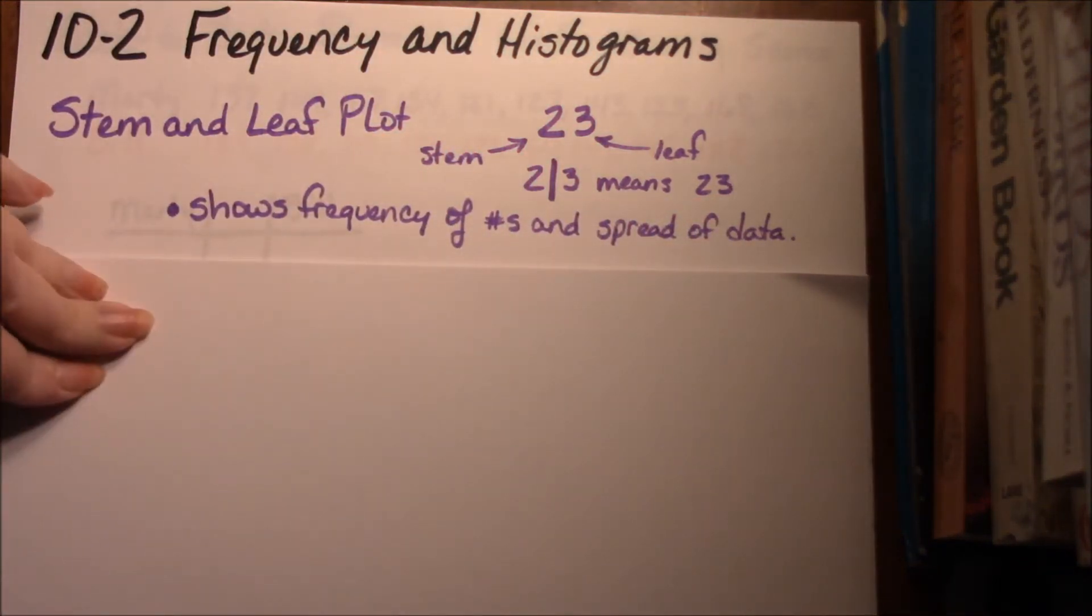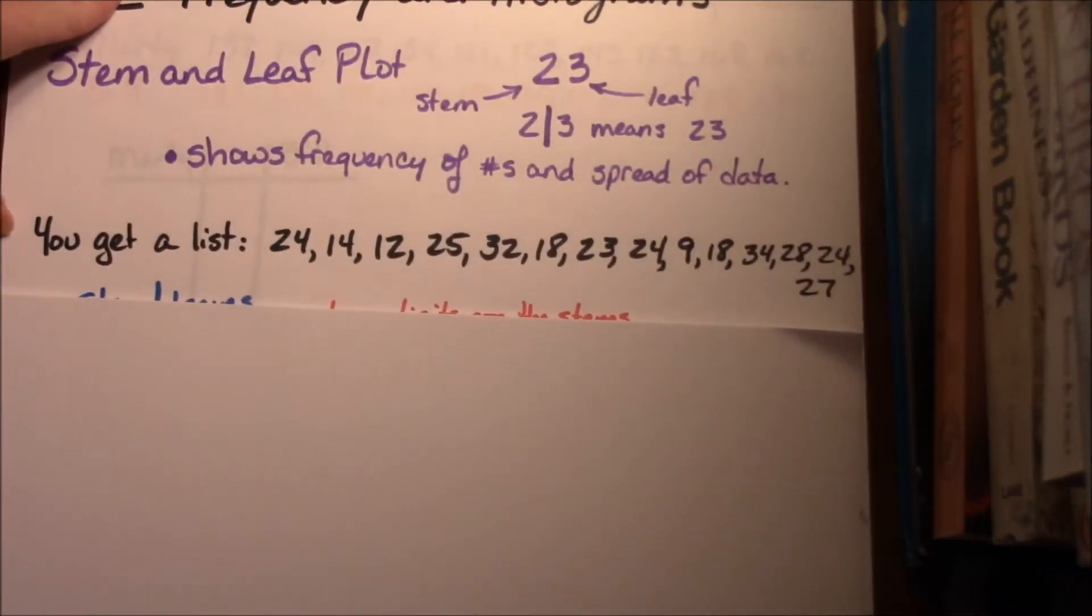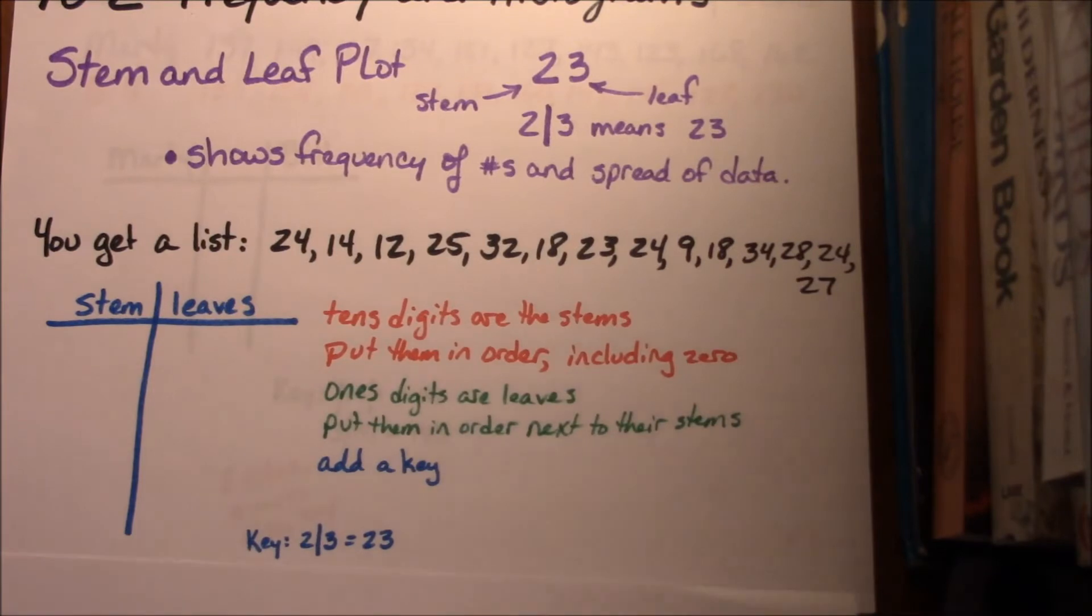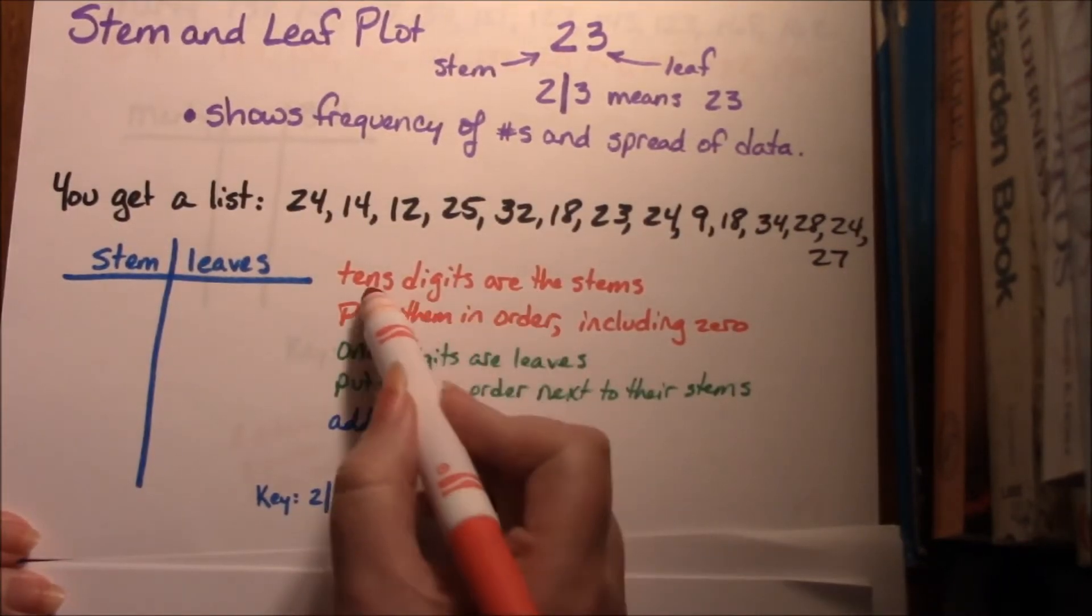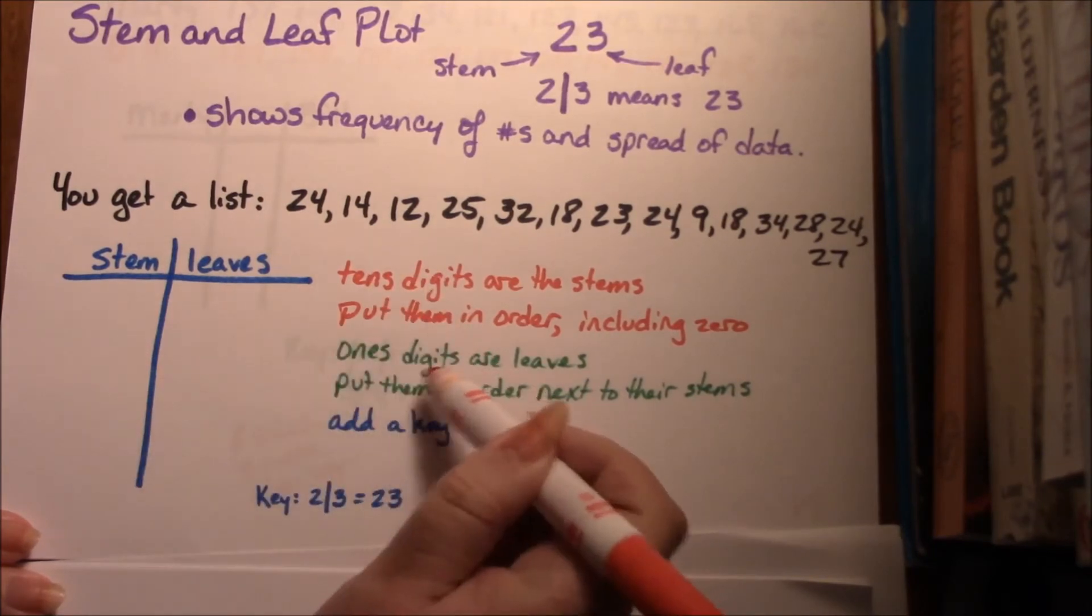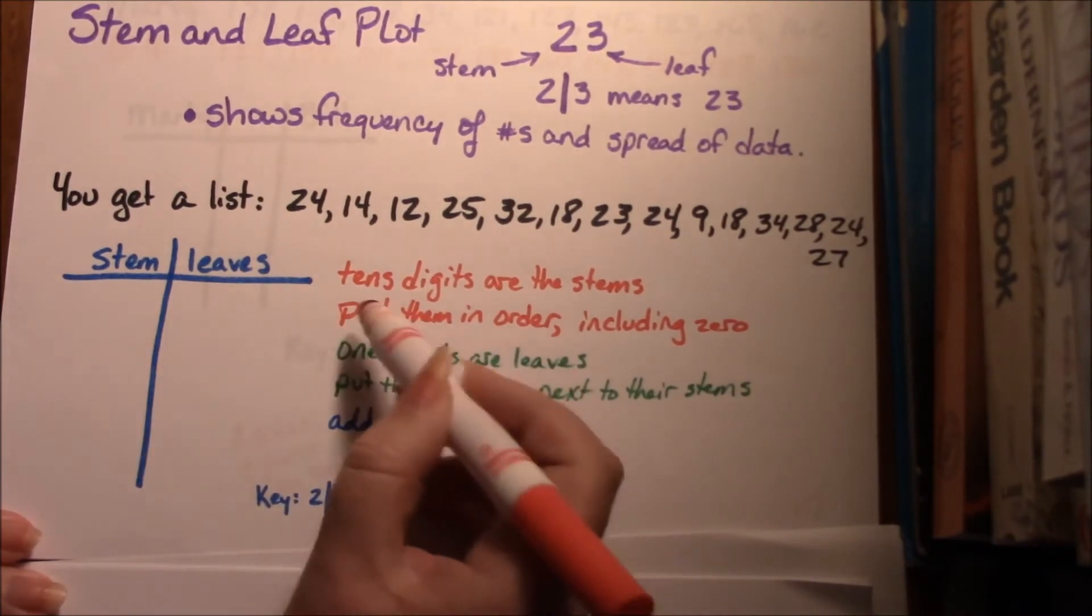So they give you a list of numbers and they ask you to put them in the stem and leaf plot. Here we have our frame and all of the tens digits are the stems and those go in this column, and the one digits are the leaves.